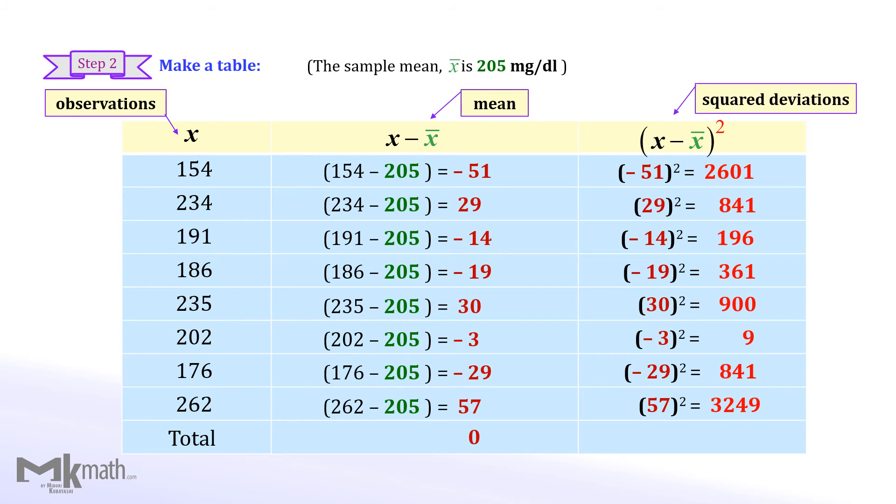Make sure to get 0 at the total in the second column. Get the sum of the last column as 8998.